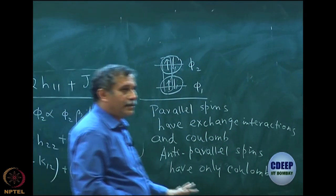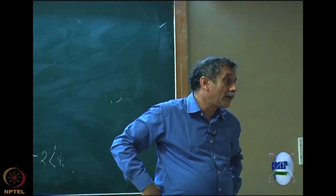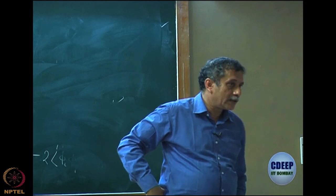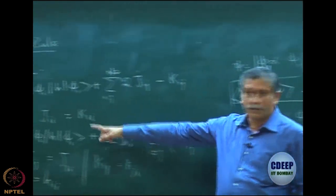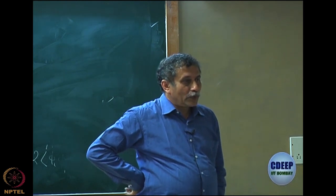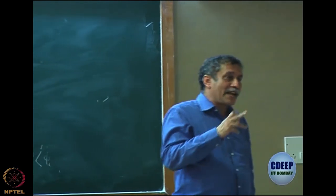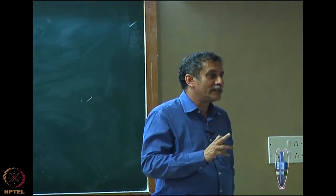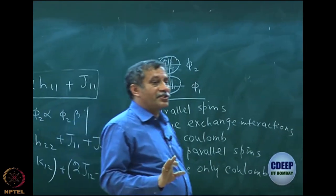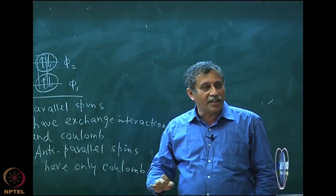The final outcome is: antiparallel spins have only Coulomb interaction. Parallel spins have both Coulomb and exchange interactions — that is the important thing. So if you want to count Coulomb, count both parallel and antiparallel pairs. If you want to count exchange, count only parallel spin pairs.